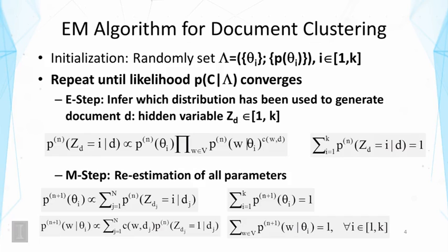It's very important to understand these constraints, as they are precisely the normalizers in all these formulas. It's also important to know what each distribution is over. For example, p(θ) is over all k topics, so those k probabilities sum to one, whereas p(word | θ) is a probability distribution over all the words, so all those probabilities must sum to one.